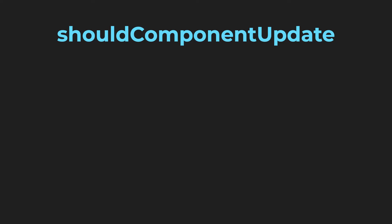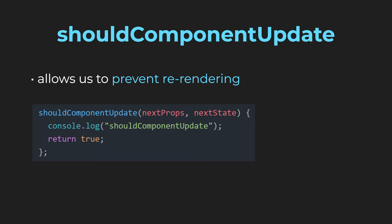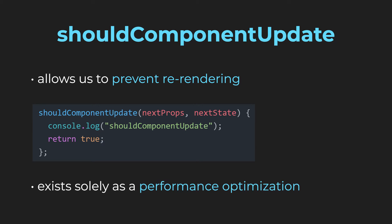Now let's move on to ShouldComponentUpdate. By default, a React component re-renders on every state change, but sometimes it is not necessary. ShouldComponentUpdate is called directly before the render method and allows you to prevent re-rendering. It takes the newly computed props and state as parameters and allows you to compare them with the old props and state, which you can access using the this keyword, unlike the static GetDerivedStateFromProps. This lifecycle method exists solely as a performance optimization.